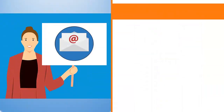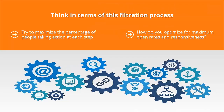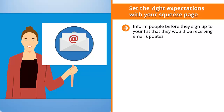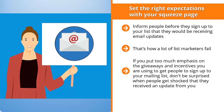How do you optimize for maximum open rates and responsiveness? First, you need to be clear about your target niche. Your updates have to be targeted to the set of problems people in your niche have. Set the right expectations with your squeeze page — inform people before they sign up that they will be receiving email updates, and clue them into the value those updates will bring to their lives. Don't just play up the incentive to get people to join your list. That's how a lot of list marketers fail — they put too much emphasis on their bribe.